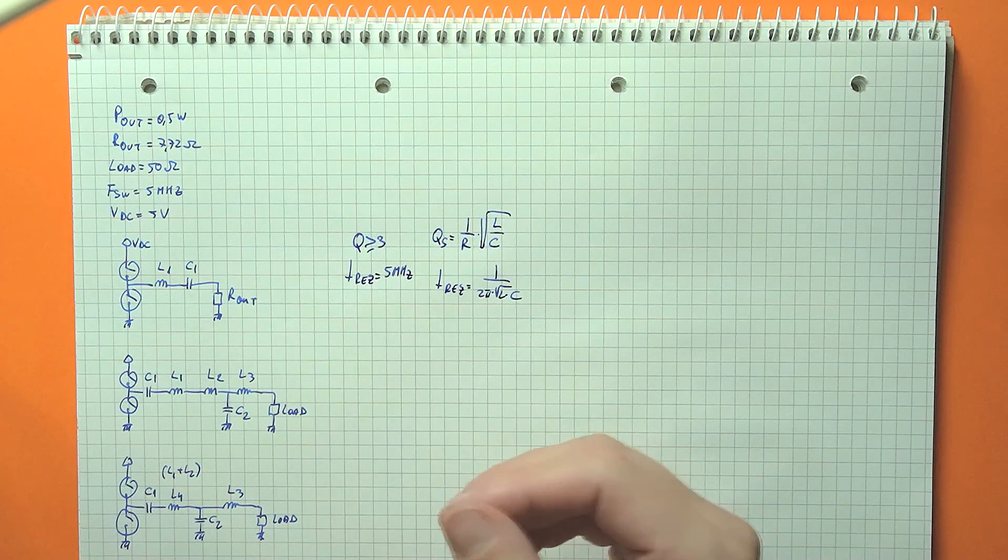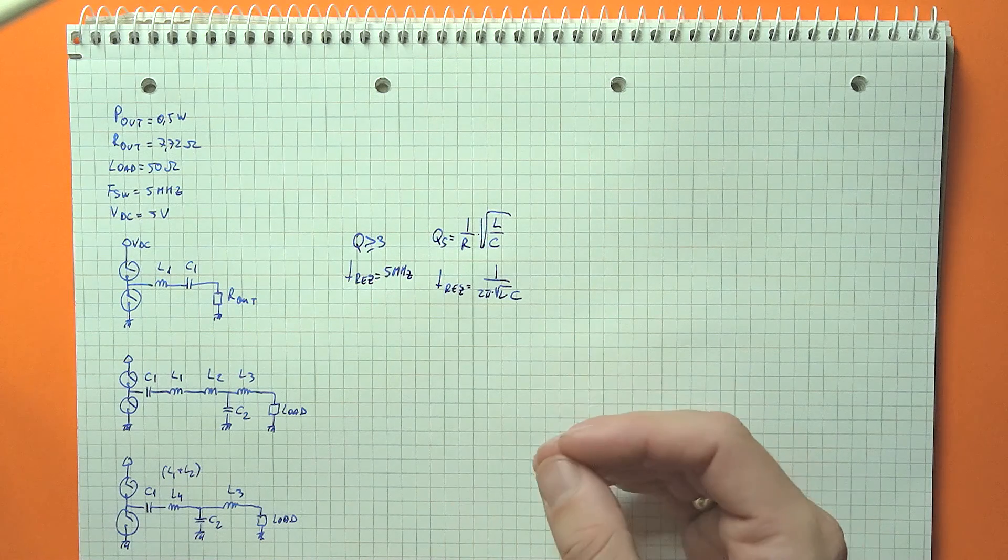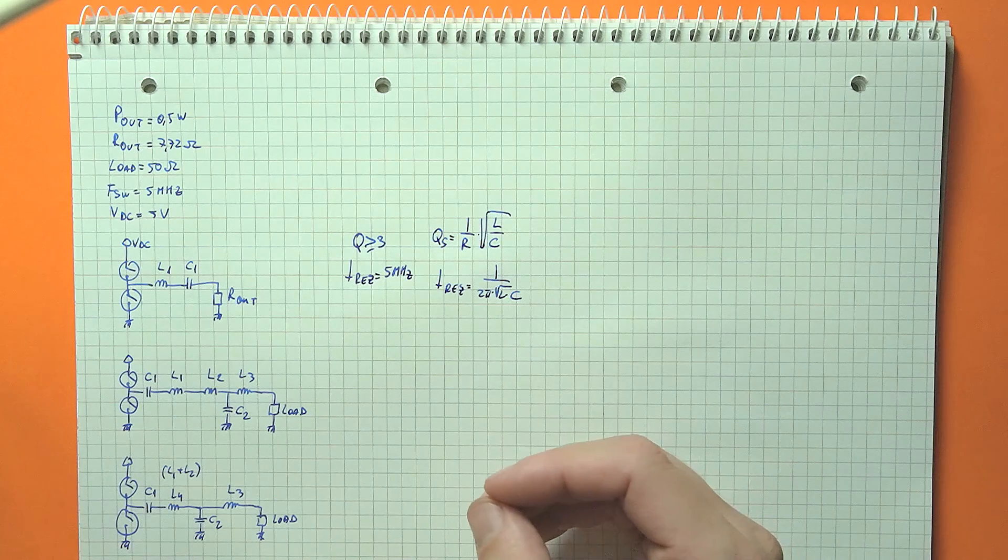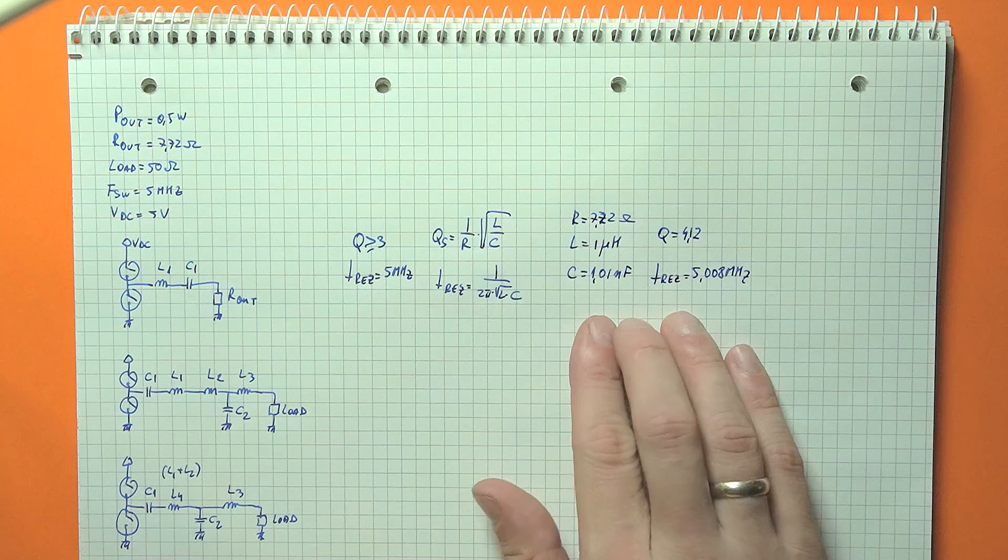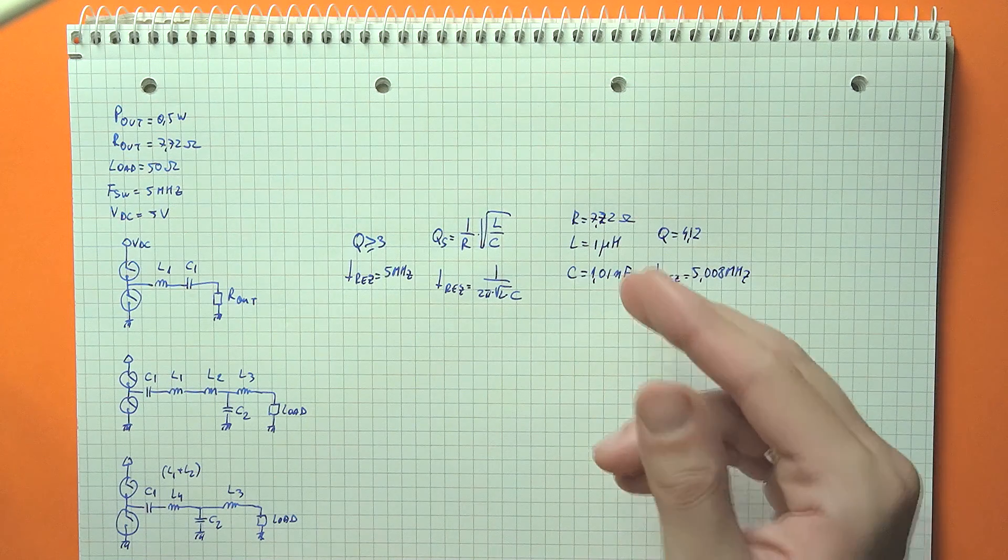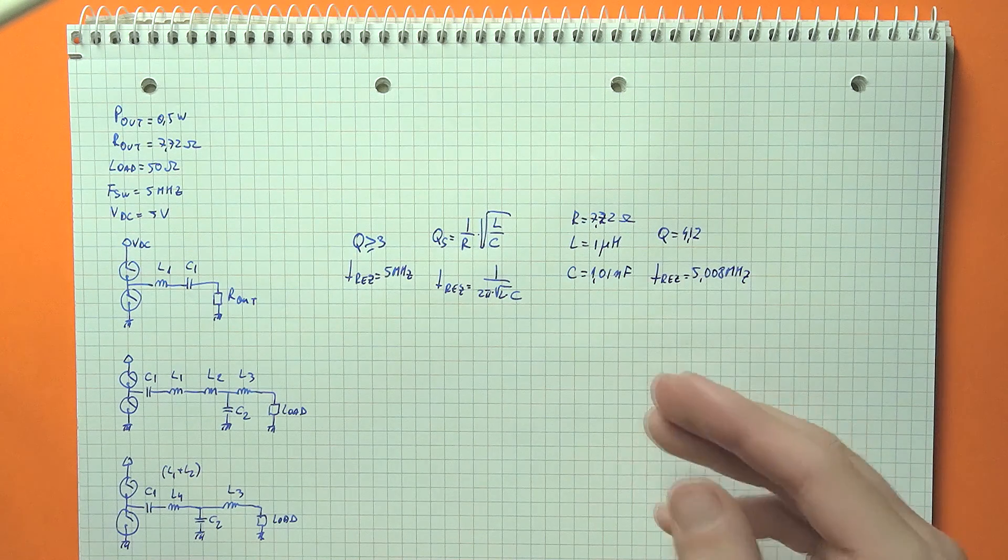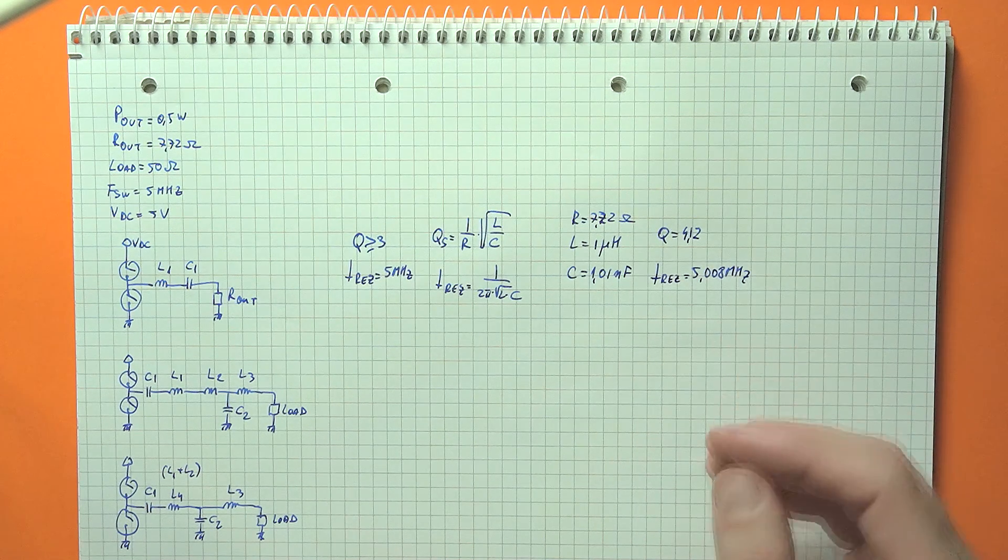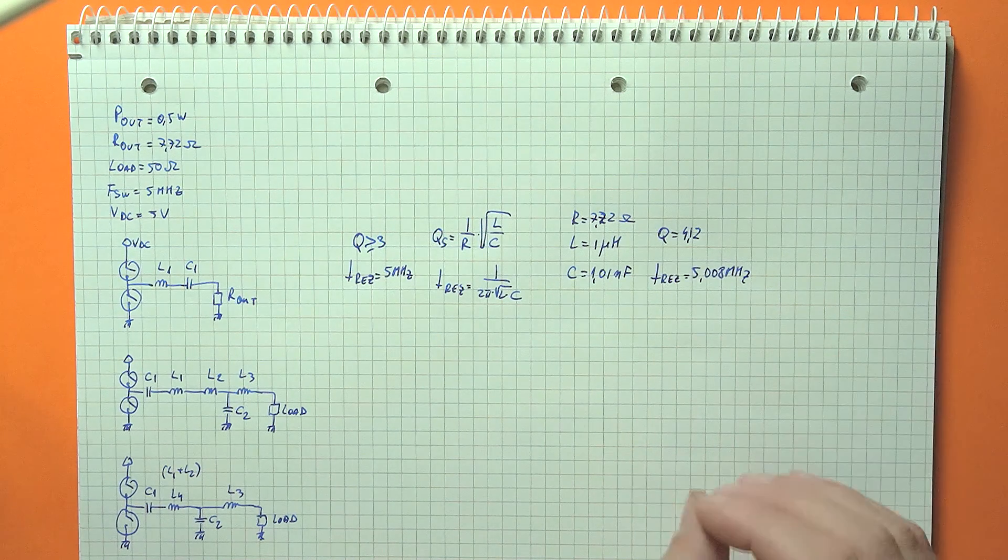We're going with T and not pi-type, since this way we can combine two elements into a single one. The first series element in the T-filter and the inductor in our base RLC circuit can be combined into a single component. So this way our final circuit will only have four reactive elements. So let's start calculating them. For our base RLC circuit, we want a Q-factor of at least 3, and the resonance frequency needs to be 5 MHz. So there are two equations to use here, and trying out various values, I came to this set. So for an output load of 7.72 ohms, using a 1.01 nF capacitor and one microhenry inductor, we get a Q-factor of 4.12 at a resonance frequency of 5.008. So it's close enough.